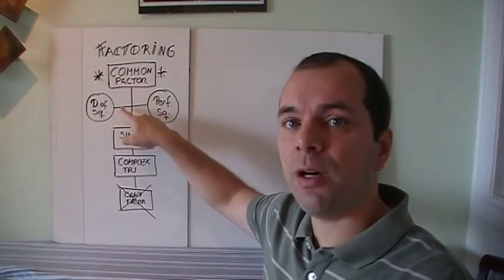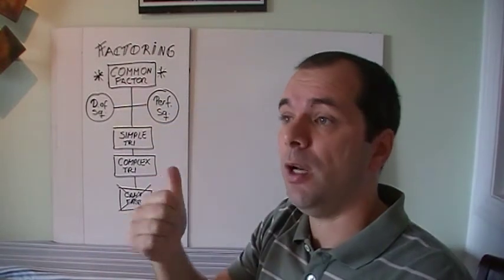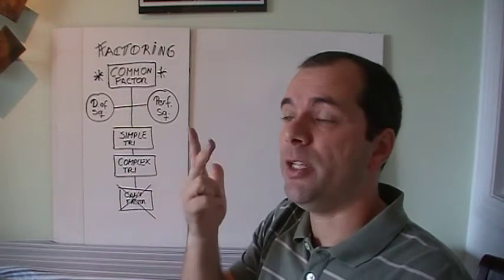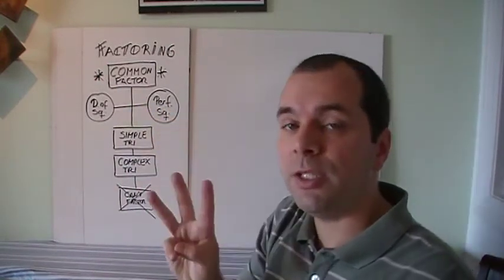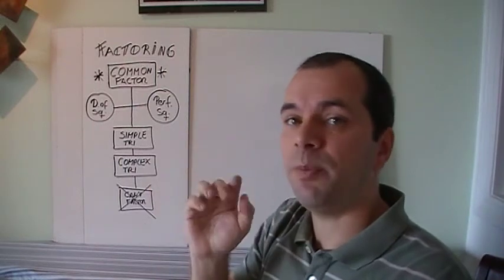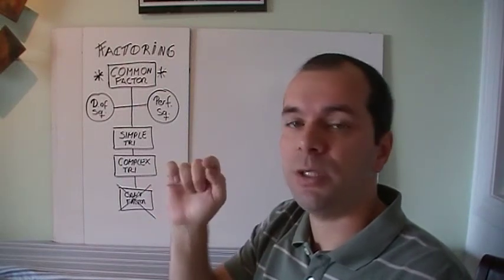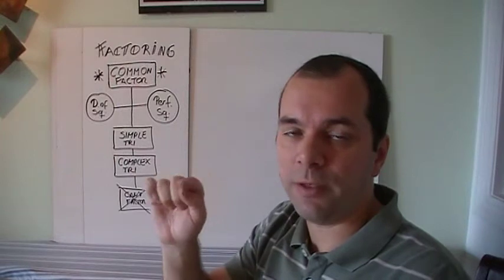The three questions for difference of squares are: are there two terms, are they both perfect squares, and is there a minus sign? Then we check for perfect squares. Are there three terms, are the first and last perfect squares, and is the middle term 2ab or twice the first times the second?